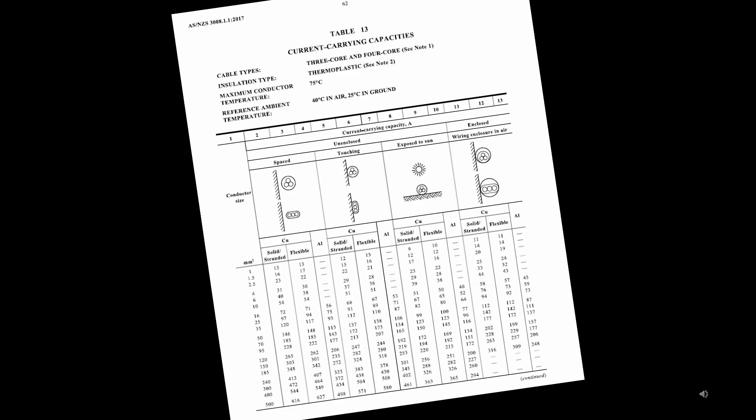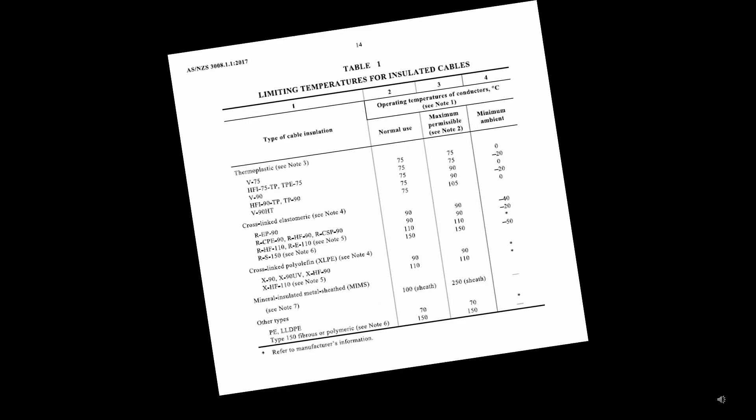Let's go to Table 13. Following the current carrying capacity Table 13 will result in conductor temperatures of around about 75 degrees. But, our cable is XLPE and can tolerate temperatures up to 90 degrees. Table 1 shows us that XLPE is good for 90 degrees.